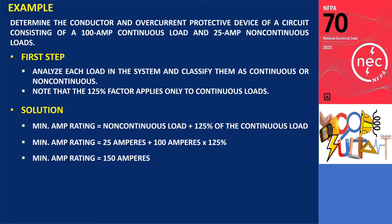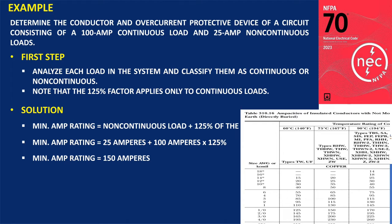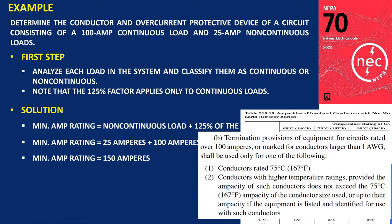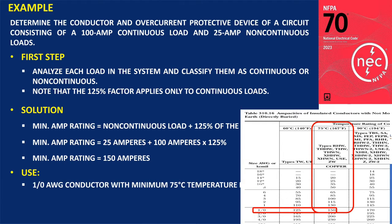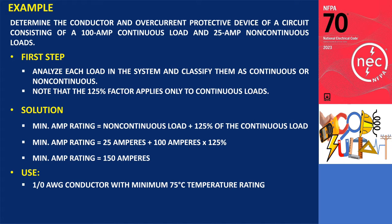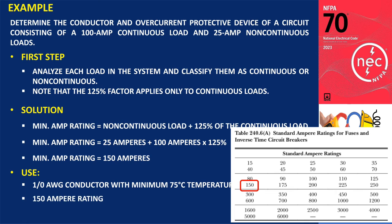Article 310 of the NEC provides guidelines for conductor selection, specifically Table 310.16 of NEC 2023. Since the total current exceeds 100A, and per Section 110.14C1B on equipment terminal rating, we base conductor size selection on the 75°C column of Table 310.16. Consequently, the appropriate conductor size is determined to be 1-0 AWG. For overcurrent protection, consulting Table 240.6A indicates a suitable device rating of 150A.